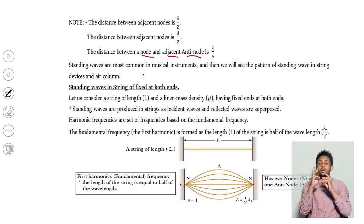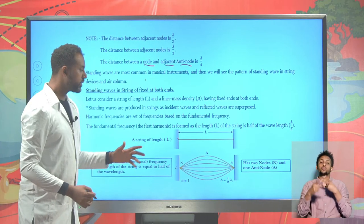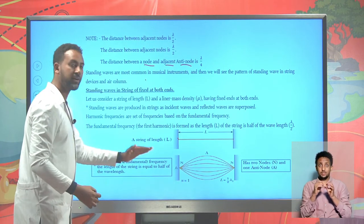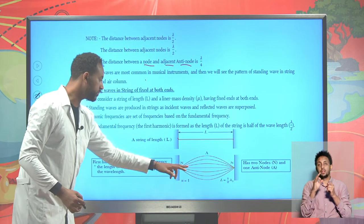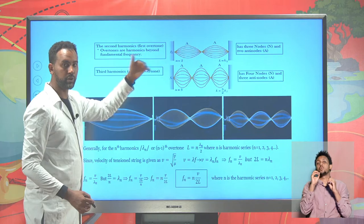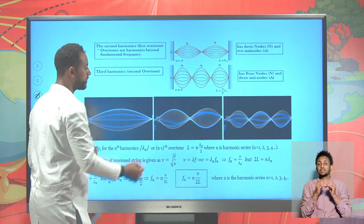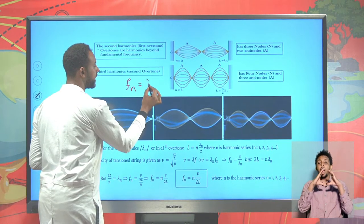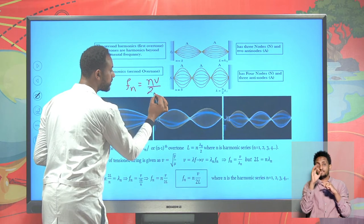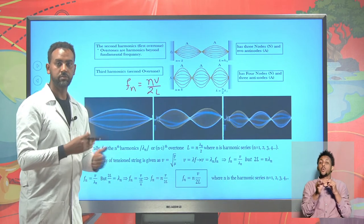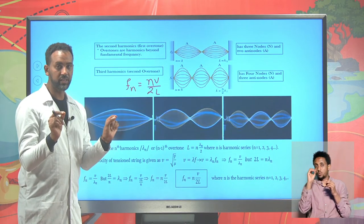For standing waves in a string fixed at both ends, harmonic series frequencies can be formed. This might be the fundamental frequency or higher harmonics - the second harmonic, the third harmonic, and so on. The mathematical expression for the nth harmonic of a string fixed at both ends can be determined as fn = nv / (2L), where v is the wave speed and L is the length. This is how we express the harmonic frequencies of a string device fixed at both ends.